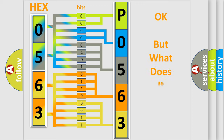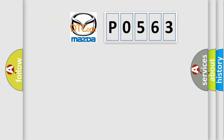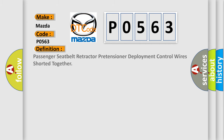The number itself does not make sense to us if we cannot assign information about what it actually expresses. So, what does the diagnostic trouble code P0563 interpret specifically for Mazda car manufacturers? The basic definition is: passenger seatbelt retractor pretensioner deployment control wires shorted together.